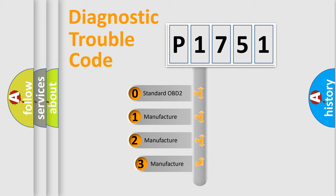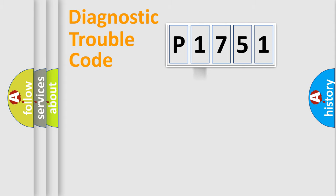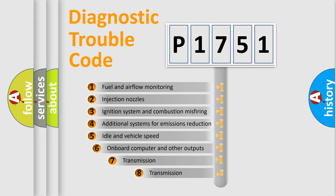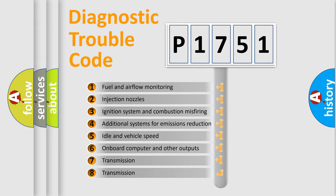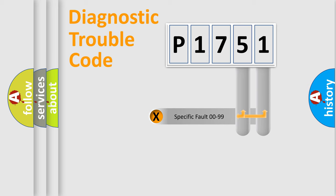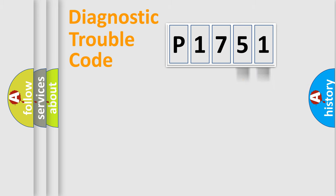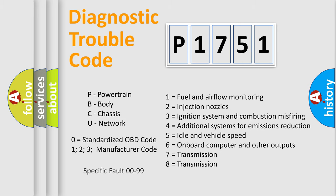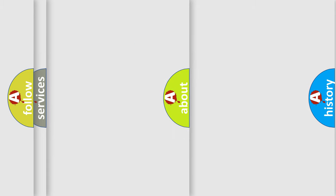If the second character is expressed as zero, it is a standardized error. In the case of numbers 1, 2, or 3, it is a more manufacturer-specific expression of a car-specific error. The third character specifies a subset of errors. This distribution is valid only for the standardized DTC code, where only the last two characters define the specific fault of the group. Such a division is valid only if the second character code is expressed by the number zero.